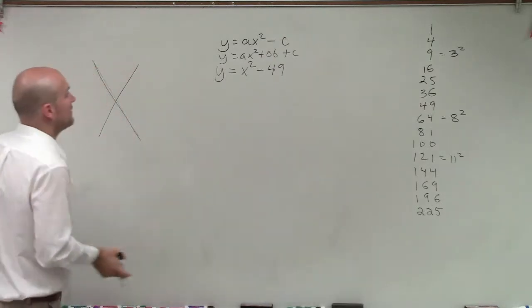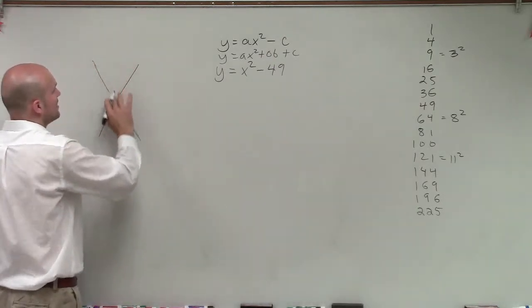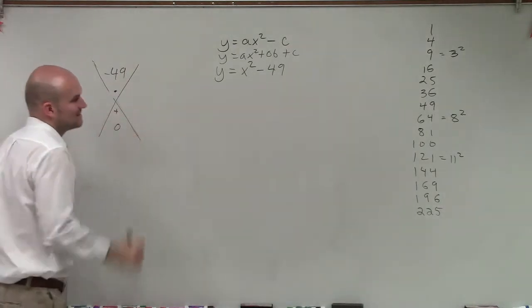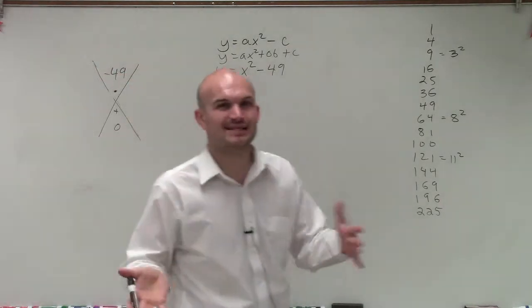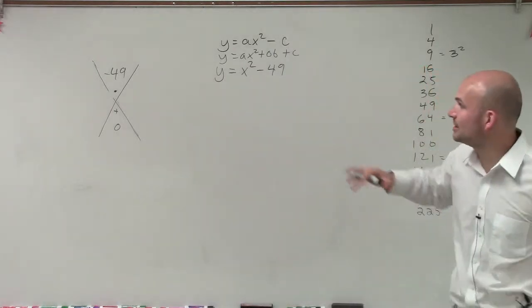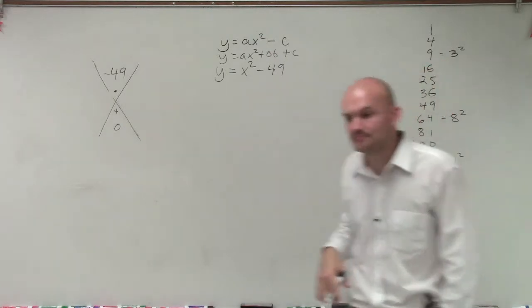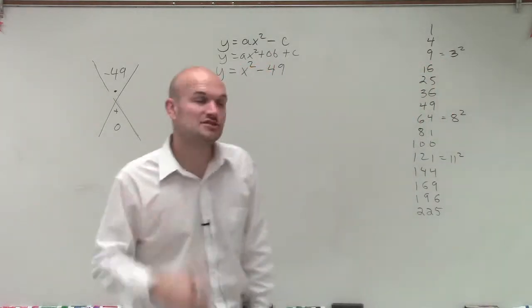So when I'm going to try to find this, I'm going to say what two numbers multiply to give me negative 49 but then add to give me 0. And you could do this factoring technique, but you don't have to for each one of these cases because what we're going to do is learn can we determine if it's a difference of two squares.